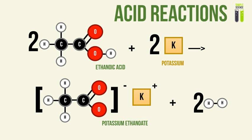What kind of acid reactions can carboxylic acids undergo? Carboxylic acids can undergo the same types of acid reactions as pretty much any acid. For example, ethanoic acid reacting with a metal such as potassium produces potassium ethanoate, whereby the negative ethanoate ion from the ethanoic acid combines with the positive potassium ion to form potassium ethanoate, and also produces hydrogen gas.